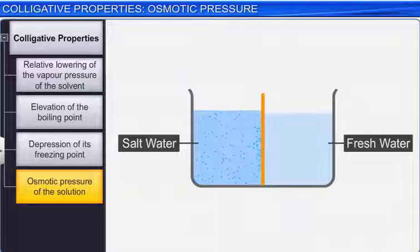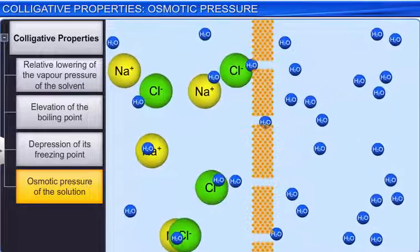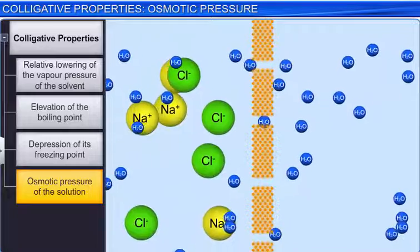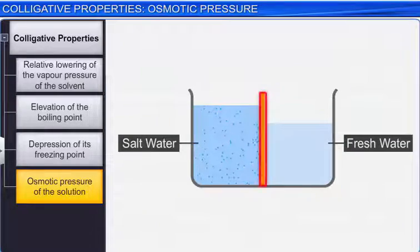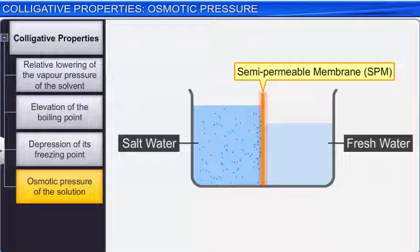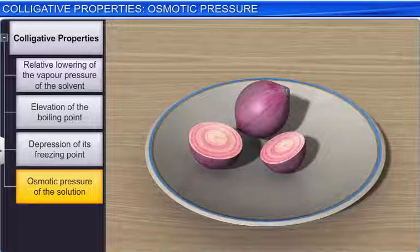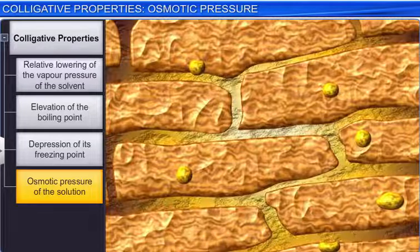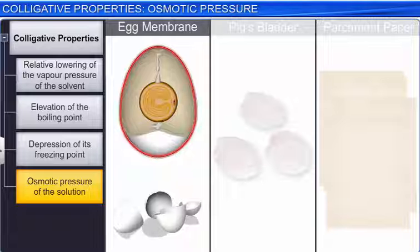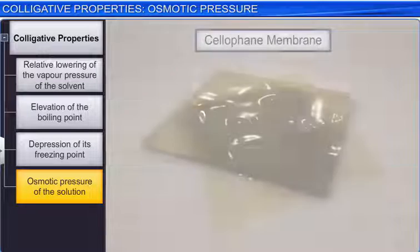Small solvent molecules like water can pass through the holes of these membranes, but bigger molecules like the solute are unable to pass through them. Such membranes, which are selectively permeable to only certain molecules, are known as semi-permeable membranes. These membranes can be of natural or synthetic origin. Vegetable membranes found just under the outer skin, like in the onion, membranes found under the shell of an egg, a pig's bladder, or parchment are examples of natural membranes, while cellophane is an example of a synthetic membrane.